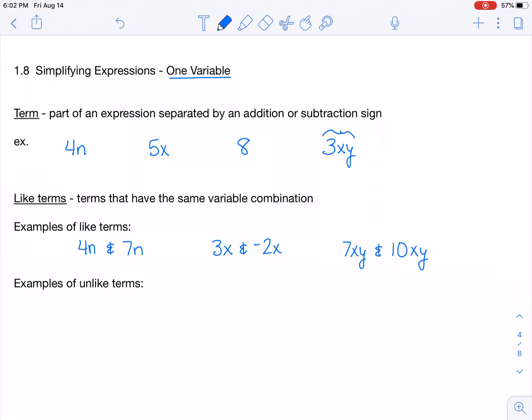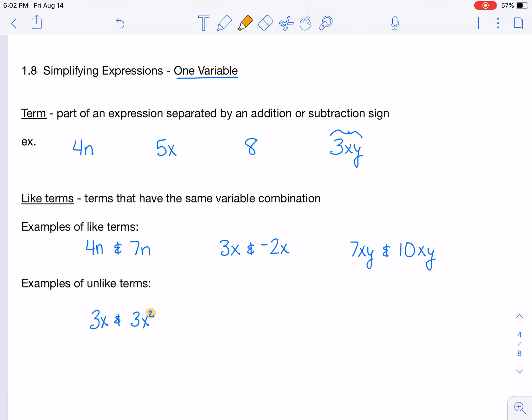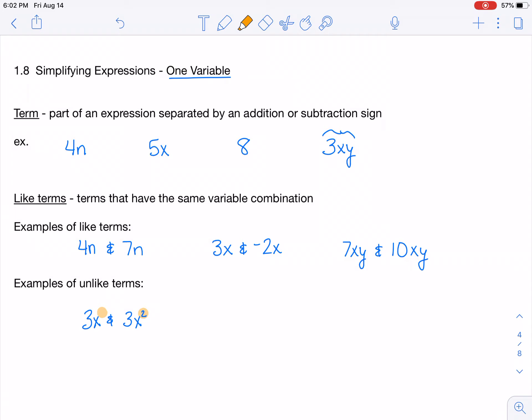So some things that are unlike terms. We could say 3x and 3x squared. Even though those have a lot of similarities, they both have an x, they both even have a 3, which the coefficient does not have to be the same. But they are not like terms because this one has an exponent and the first one here does not. So those are not like terms. If we had an example that included things like that, we would not want to combine them. Sometimes people are tempted to say 6x or 6x squared or even 6x to the third if they see those. And you should not combine those at all.